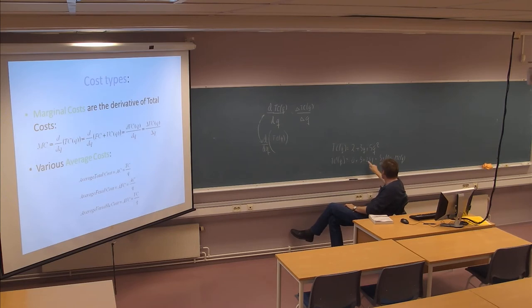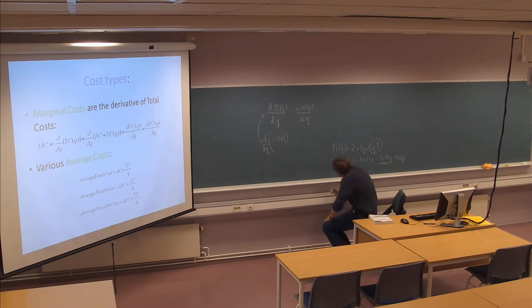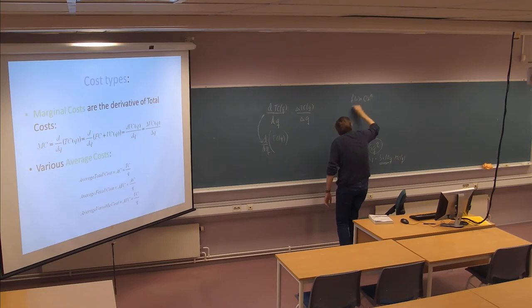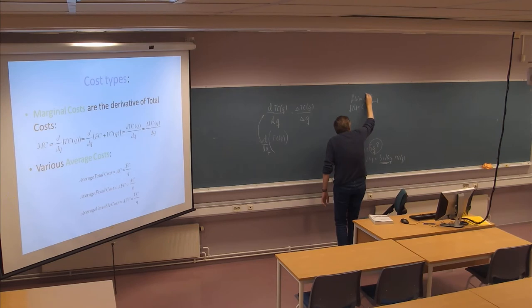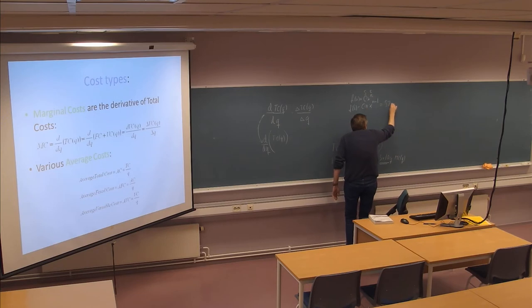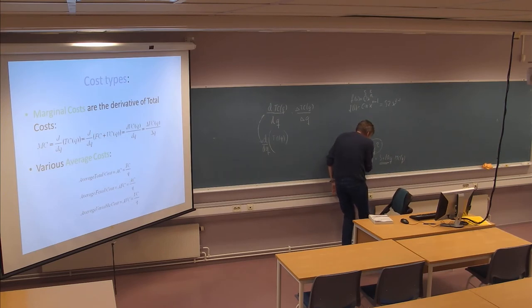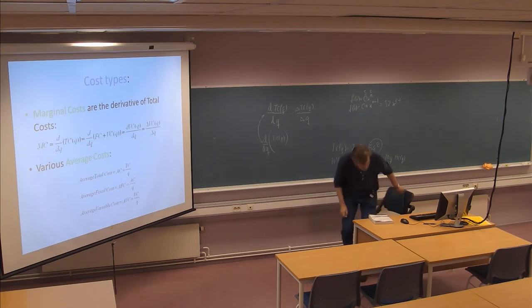A student asks where the 10 comes from. The answer: 2 times 5 is 10, from the power rule for derivatives. If f(x) = c · xⁿ, then the derivative is c · n · x^(n−1). Here c is 5 and n is 2, so we get 5 · 2 · Q^(2−1) = 10Q.